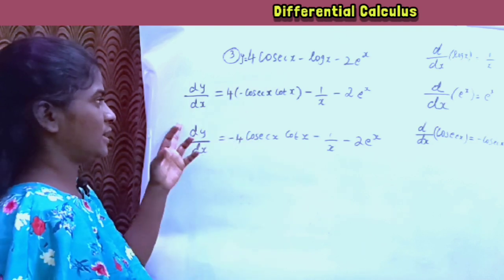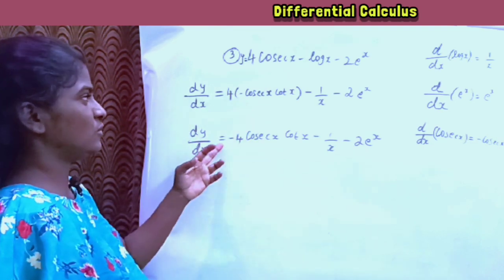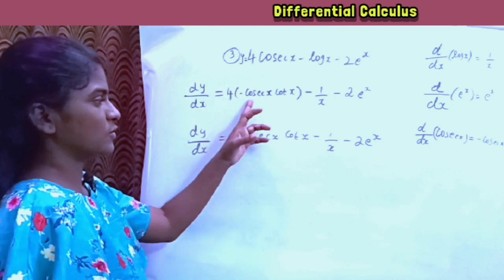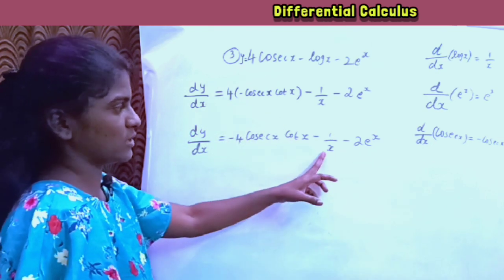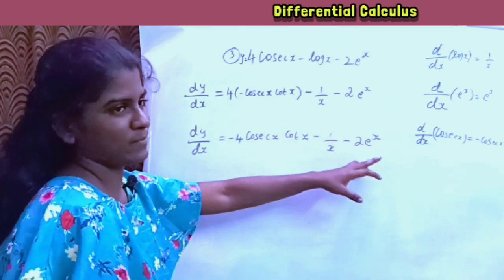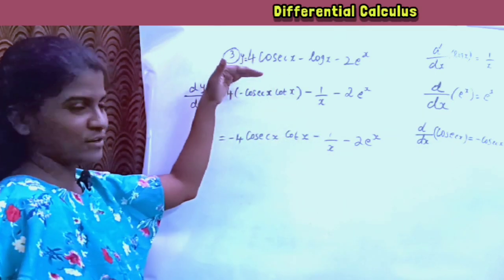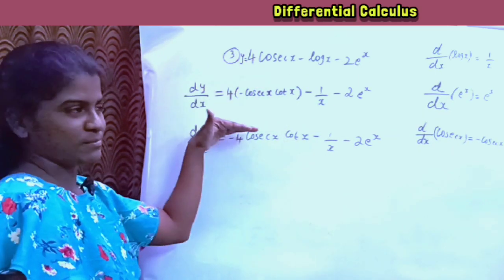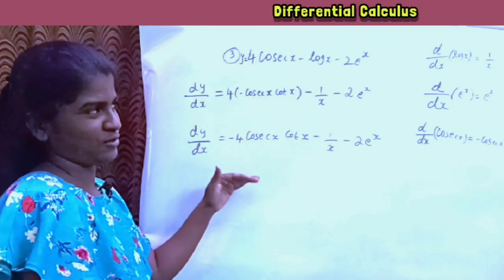Next step: dy by dx is equal to minus 4 sin x minus 1 by x minus 2 into e power x. We apply the differentiation formulas directly for each term in the equation.